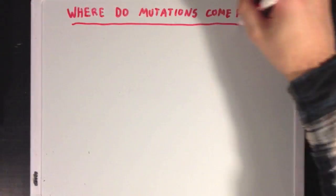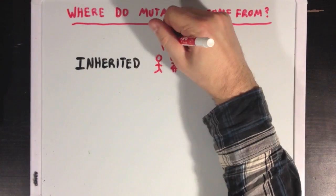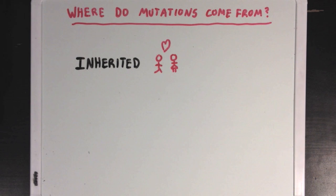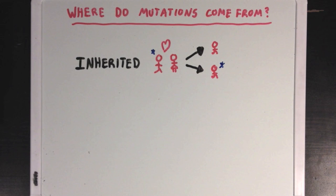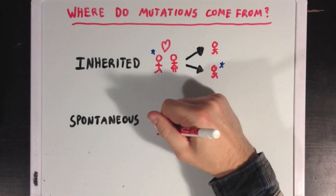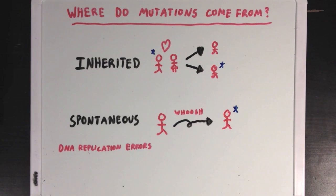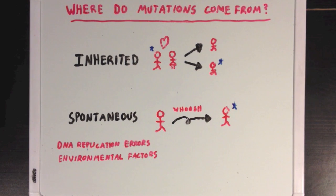So where do these types of mutations come from? There are two ways a person can get a genetic mutation. The first is that they inherit it from their parents. DNA is passed down from parents to offspring, so if we have a mutated parent, there's a good chance that at least one of their kids will inherit that mutated gene. The other possibility is that the mutation comes on spontaneously, where a person suddenly gets a mutation in their DNA without their parents having had the same mutation. Spontaneous mutations can come from many different sources, including DNA replication errors, environmental factors like certain poisons, or they can come on entirely randomly.